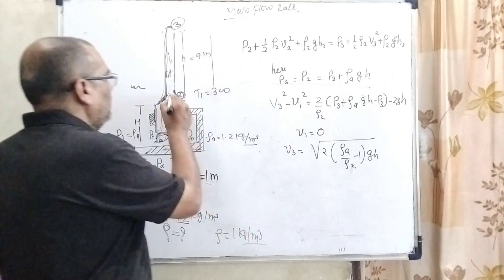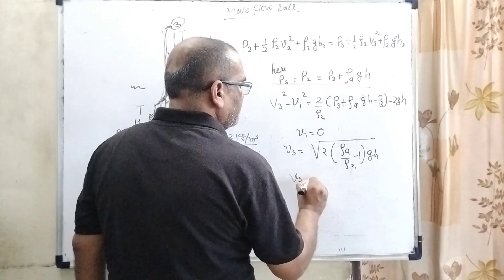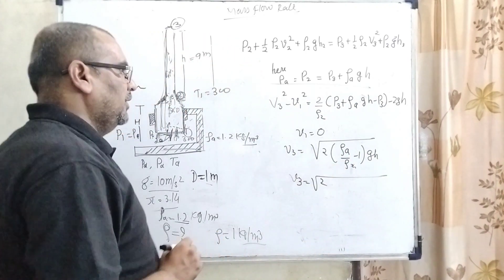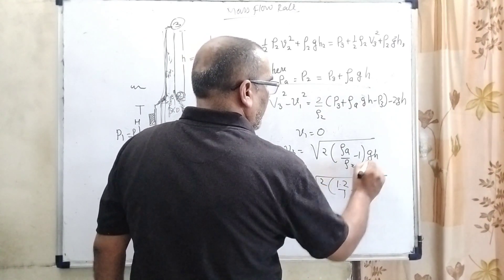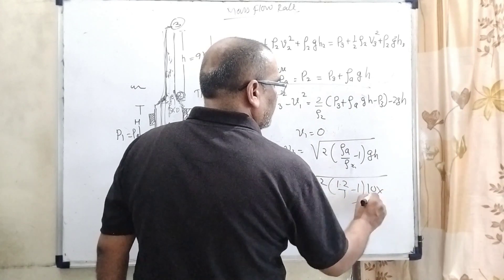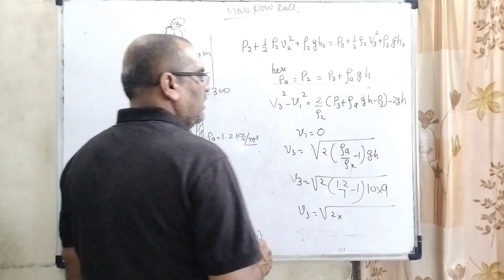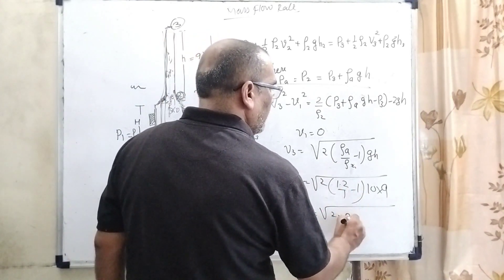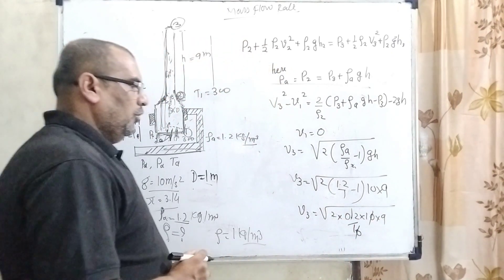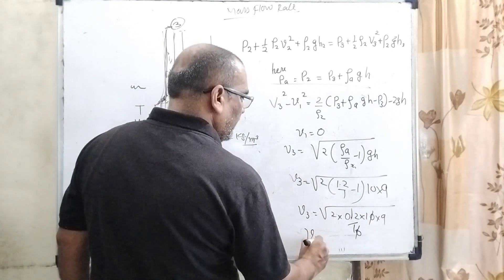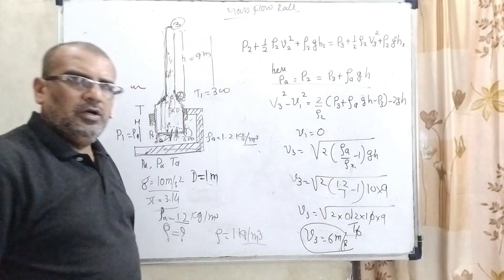That is: 2 times the density difference. The initial density is 1.2, here 1, so 1.2 minus 1 equals 0.2 times 10 times 9. V_3 equals 2 times 0.2 times 10 times 9. That's 2 times 4, 4 times 9 is 36. V_3 equals 6 meters per second. That is V_3, but we have to find the mass flow rate.